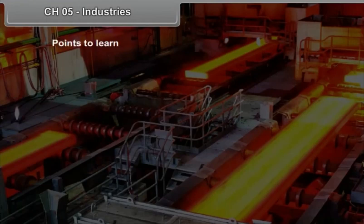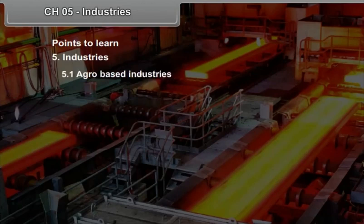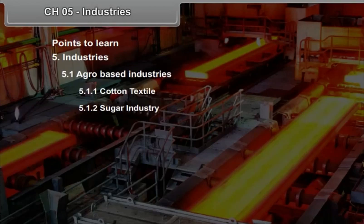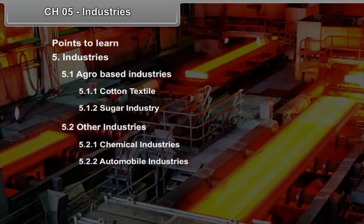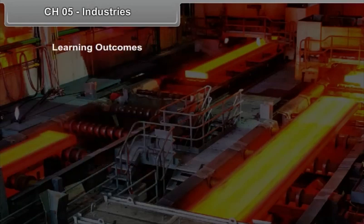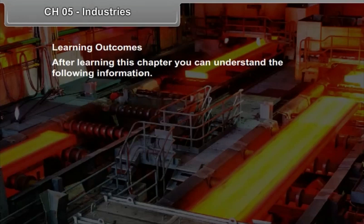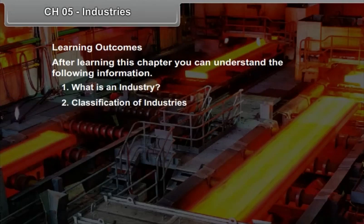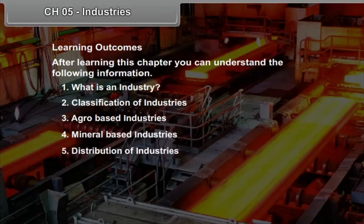Chapter 5: Industries. Topics include: Agro-based Industries covering Cotton Textile and Sugar Industry; Other Industries covering Chemical, Automobile and Electronic Industries; and Industrial Pollution. Learning outcomes include understanding what an industry is, classification of industries, agro-based industries, mineral based industries, distribution of industries, and causes of industrial pollution.